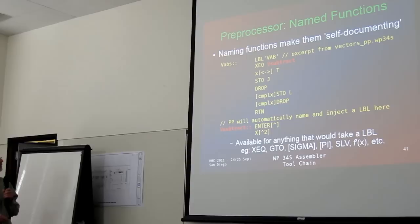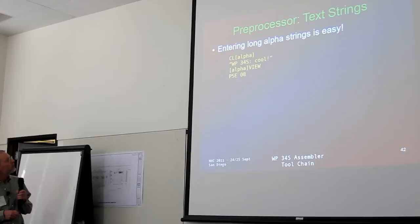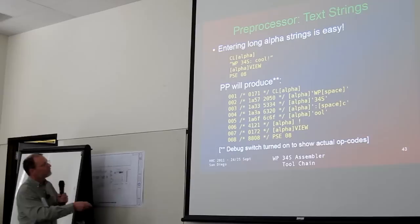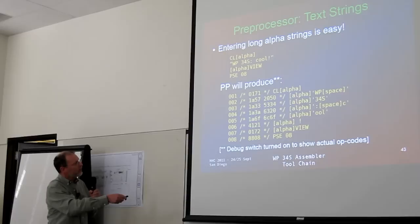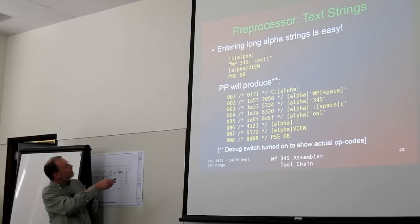Another feature Paulie wanted was an easier way to put ASCII strings in the assembler. The old way is kind of like this — alpha key plus a single character. The new alpha with a quoted string is fairly new, and you give that to the tool and it'll spit out all that character-by-character notation, which is a lot easier to work with.